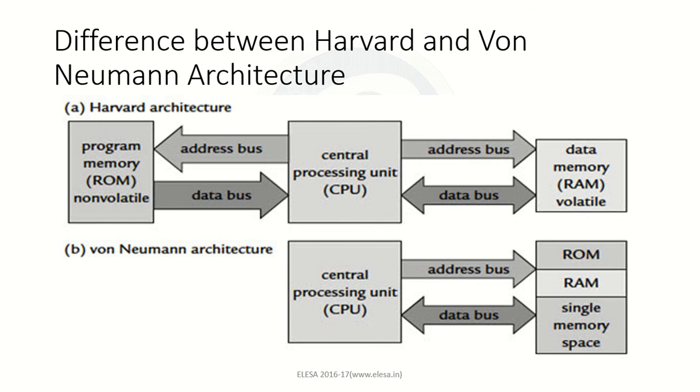As you can see here, in Harvard architecture, we need two different sets of buses to connect each memory. We need one address bus and data bus for the program memory and similarly for the data memory. In Harvard architecture, we need more hardware.